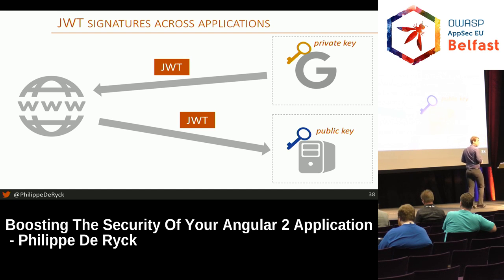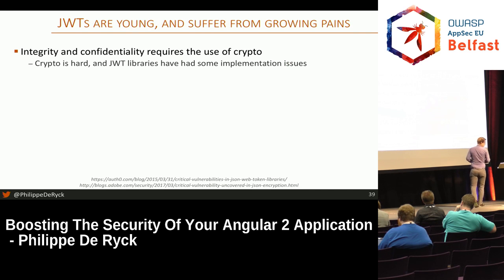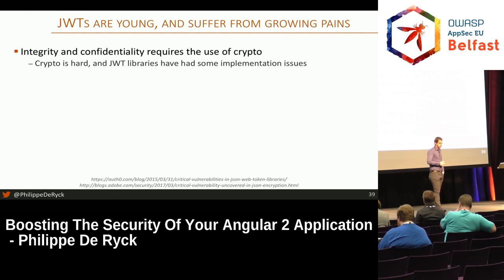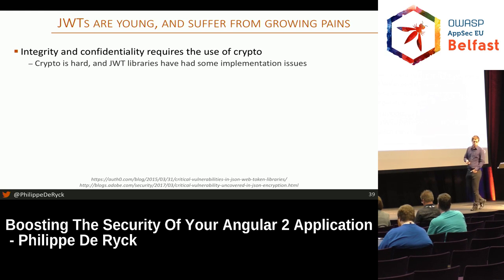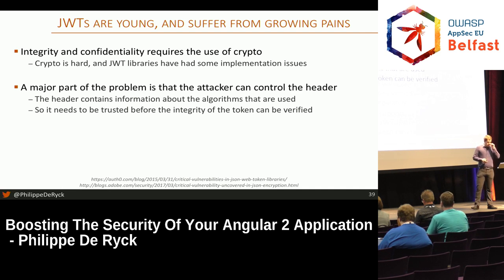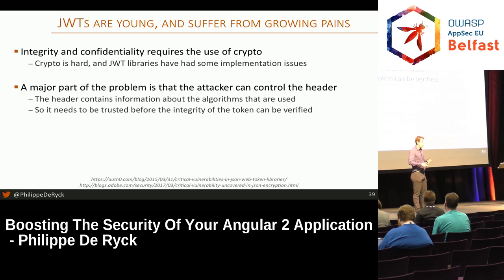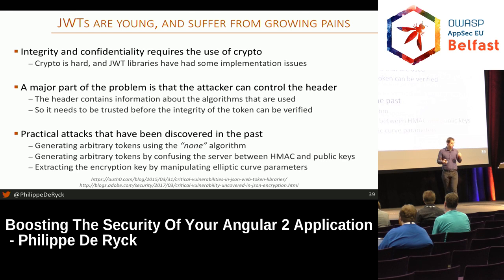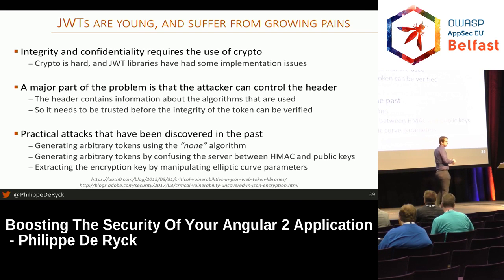The right approach is what OpenID Connect does: if Google generates a JWT token with your identity information, it uses a private key to generate a signature, and anybody with the public key can verify that signature. That's the right way to share JWT tokens across applications, or within one application with different services. You definitely don't want to share your secret with all these services. Very important, and something that not a lot of people know, because most people talk about the shared key HMAC mechanism but not about public-private key signatures.